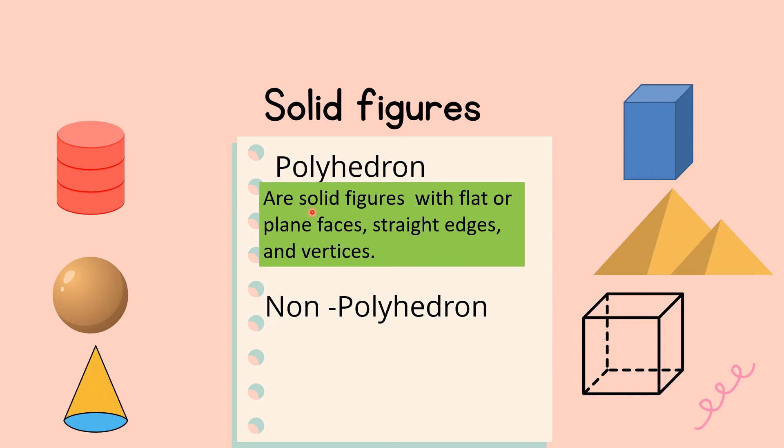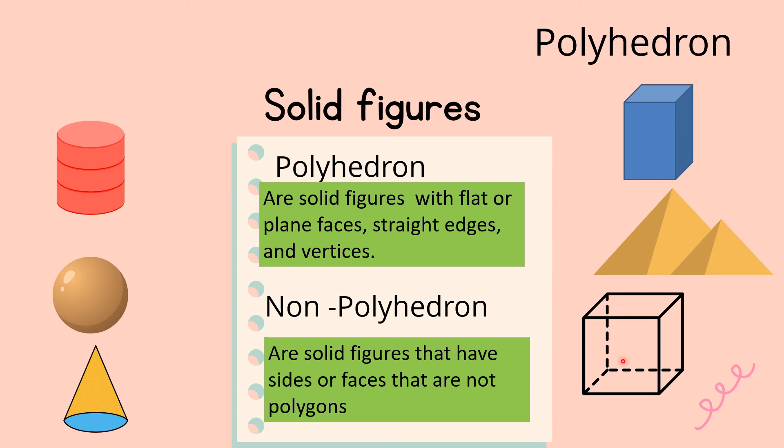So which figures here has flat or plain faces, straight edges, and vertices? Now, for non-polyhedron are solid figures that have sides or faces that are not polygons. So this one, these are classified as polyhedron because they have flat faces here, polygon. Well, this one are non-polyhedron. So their faces are not polygons. Not square, not triangle, not rectangle, not octagon, something like that.